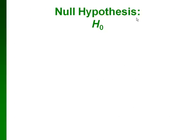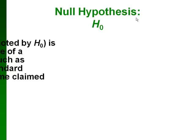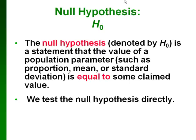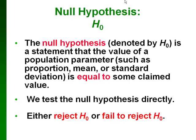When we talk about our null hypothesis, we use H with a zero subscript. This is a statement that the value of the population parameter we're interested in is equal to some specific value. In this course, we're going to assume that our null hypothesis always just has an equal sign. When we do a hypothesis test, our conclusions will be either to reject the null hypothesis or to fail to reject the null hypothesis.